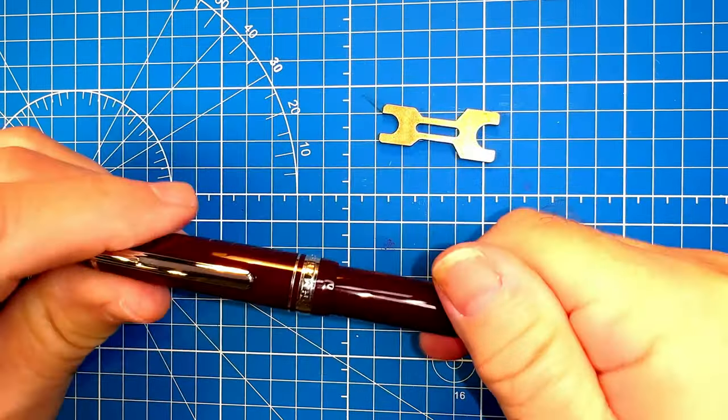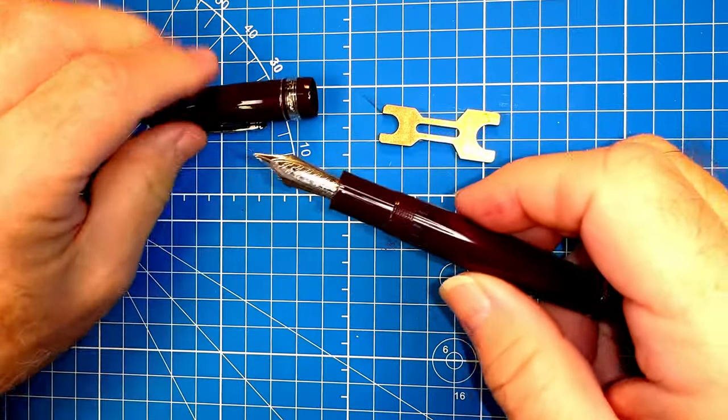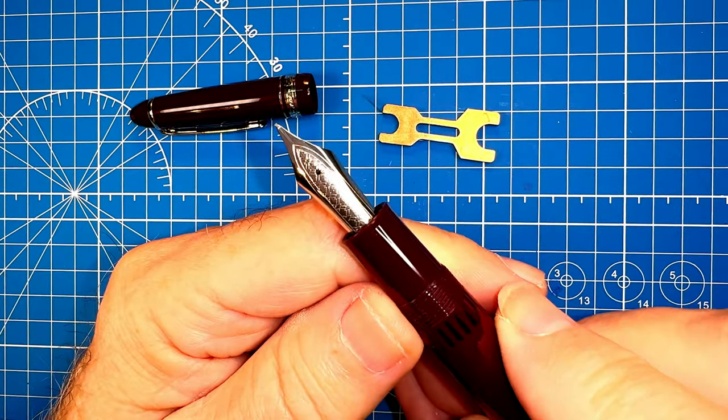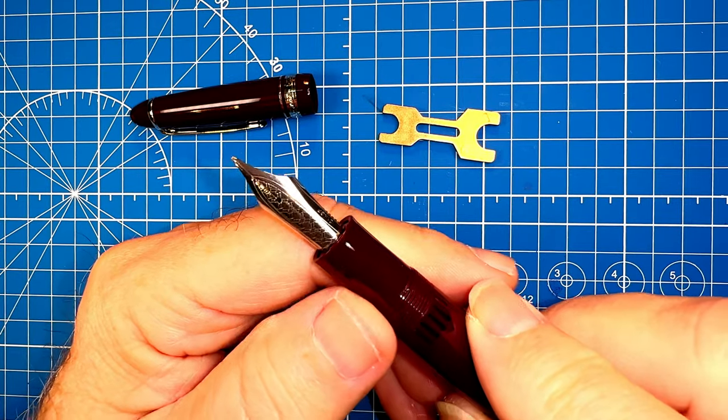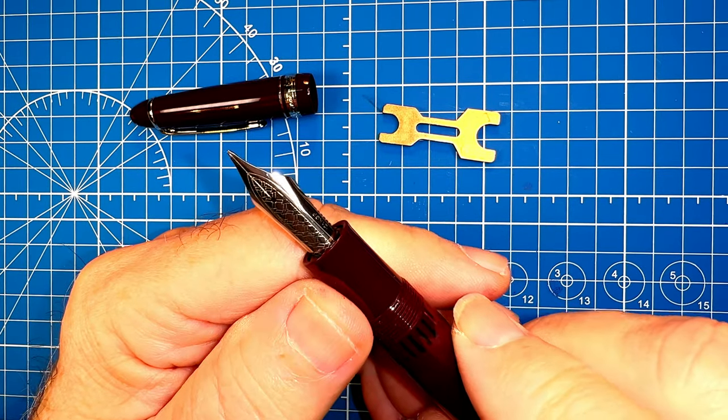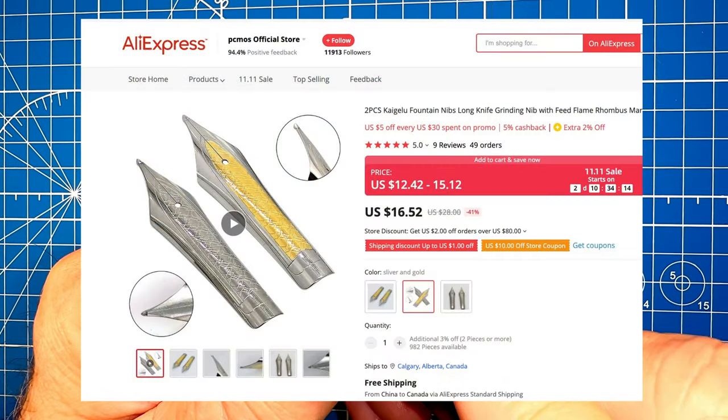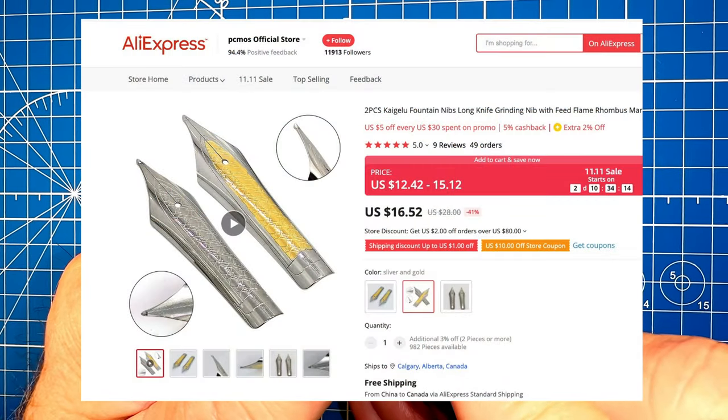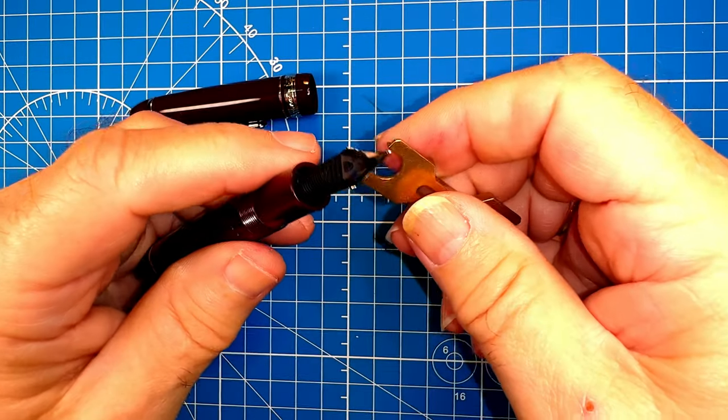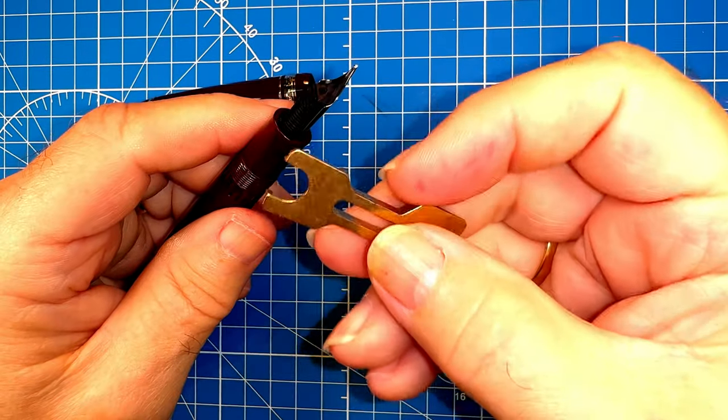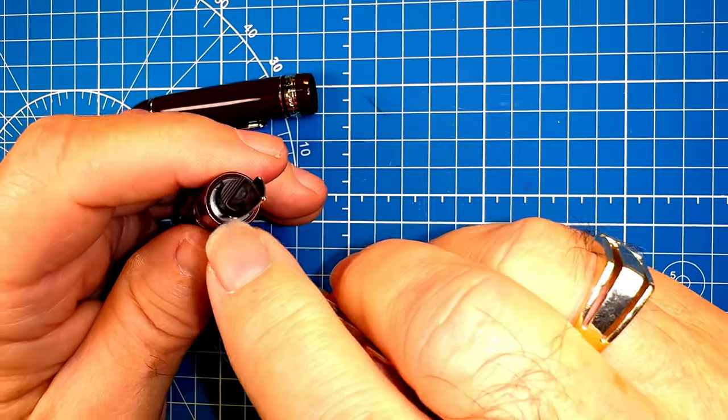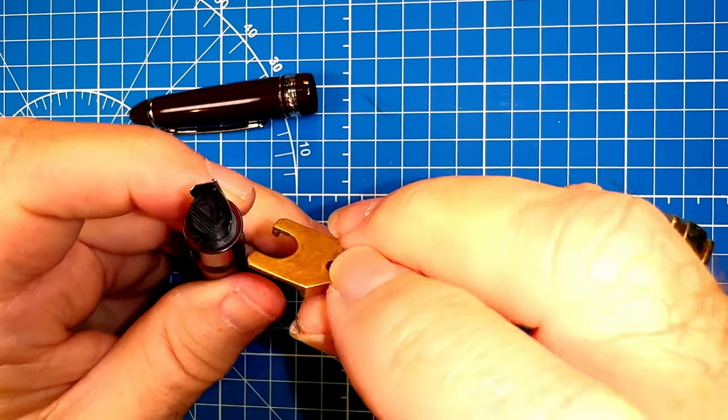First let's uncap the pen. You may notice here that I've already replaced the nib on this pen with a Kaigaloo long blade nib which you can also get on AliExpress. And to remove the nib unit use the small end of the wrench to insert these pins into the slots on the nib collar.